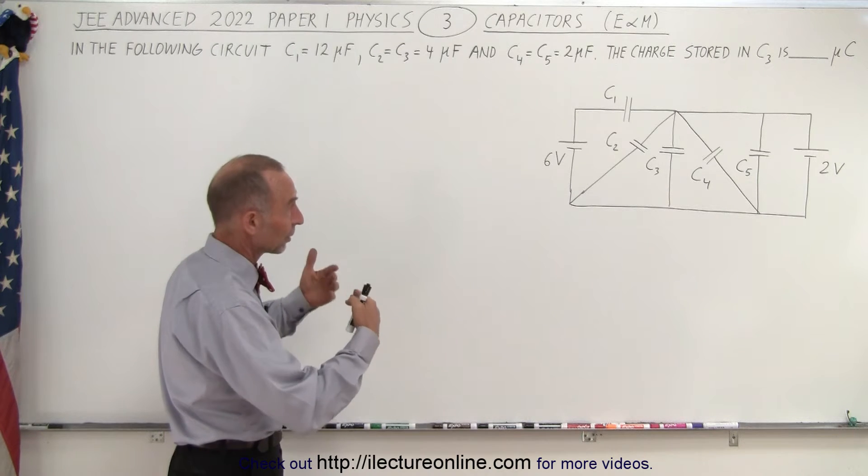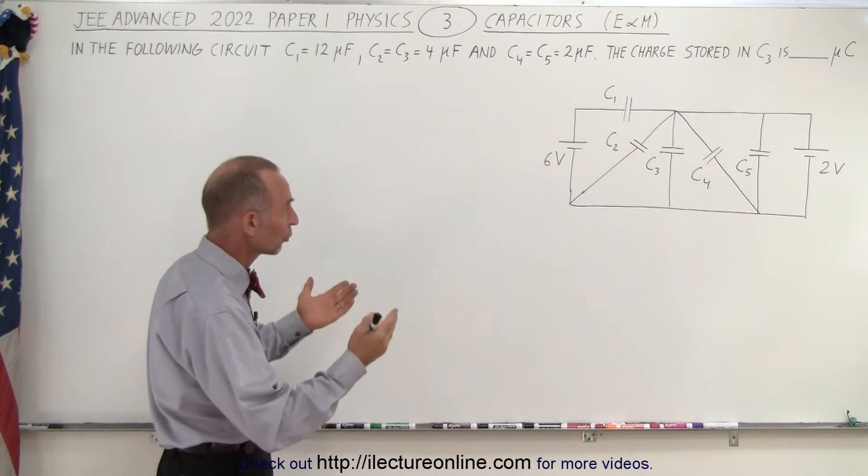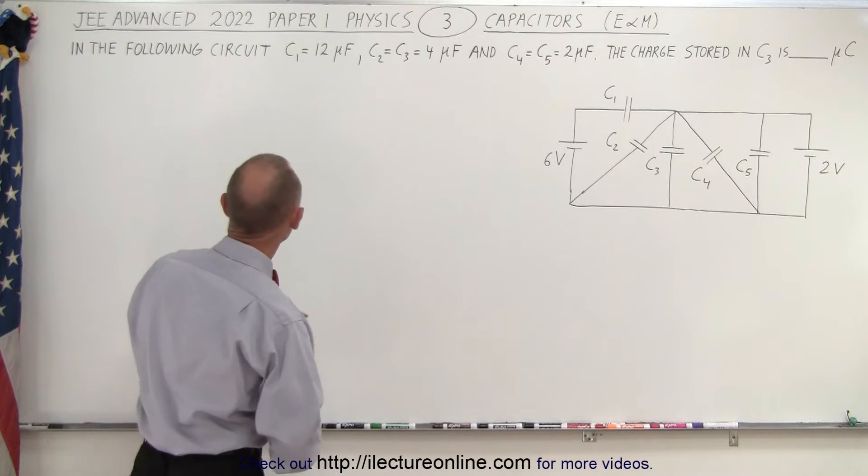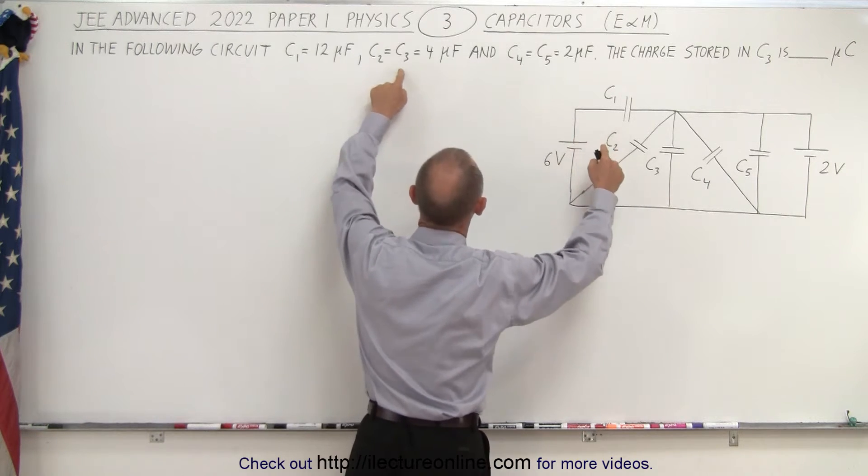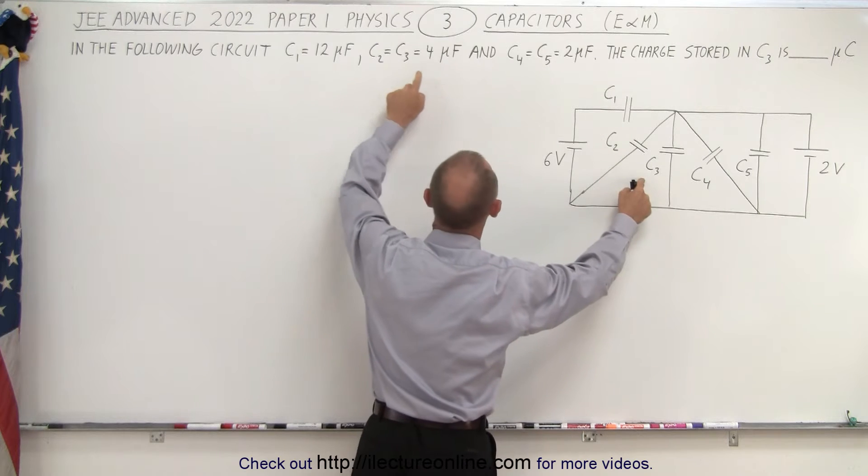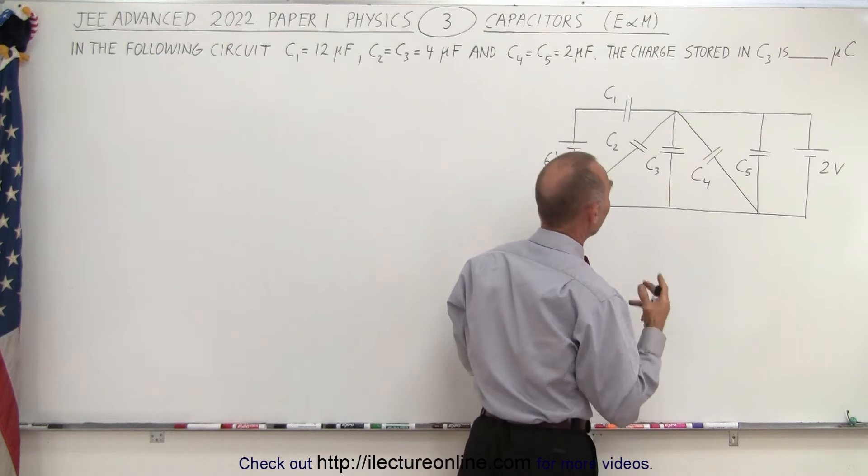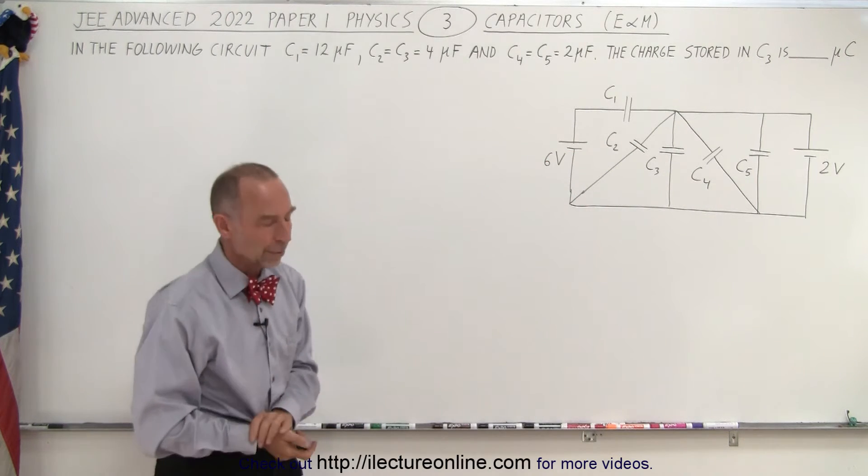Notice it's a circuit with capacitors. We have two voltage sources, one that's 6 volts, one that's 2 volts, and they give us the values for the capacitors. C1 is 12 microfarads, C2 and C3 are 4 microfarads, C4 and C5 are 2 microfarads, and they want to know the charge stored in C3.